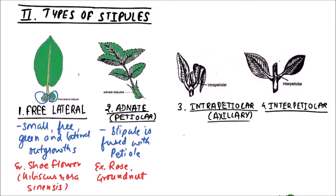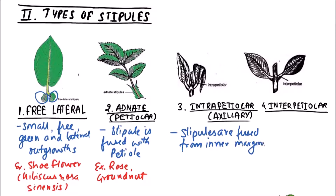The next type is Intrapetiolar or Axillary stipule. In this type, stipules are fused from inner margins to become axillary. The examples include Gardenia.